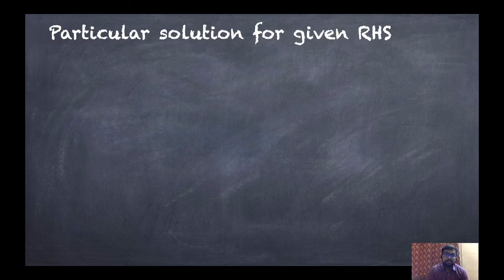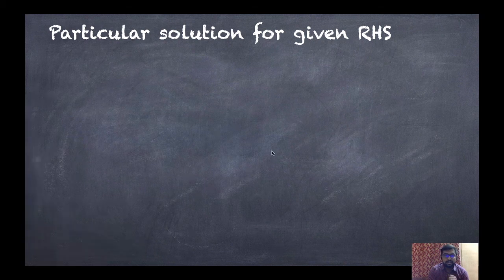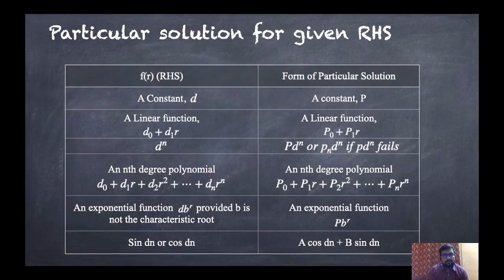For different right-hand sides, we have different choices of particular solution. There are six to seven types. First type: whenever a constant is on the right-hand side, we take the form as constant P.